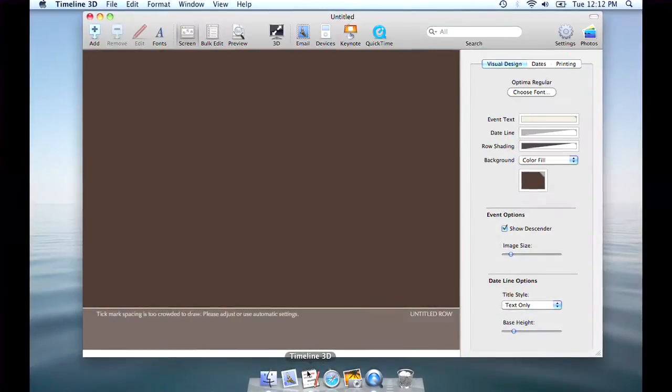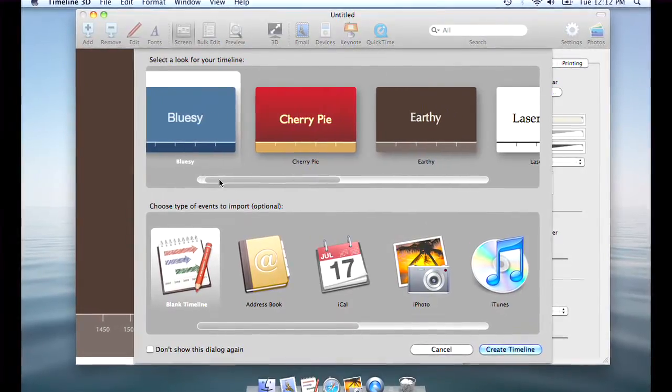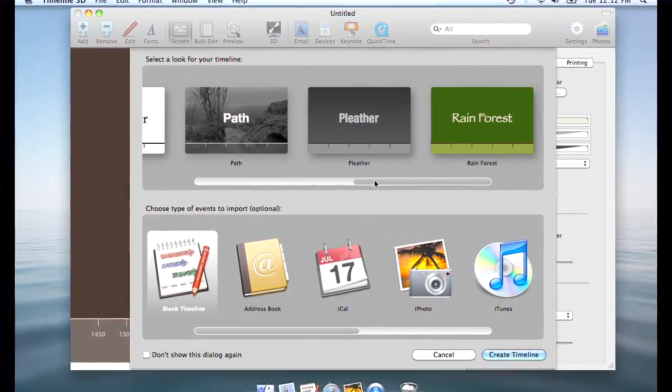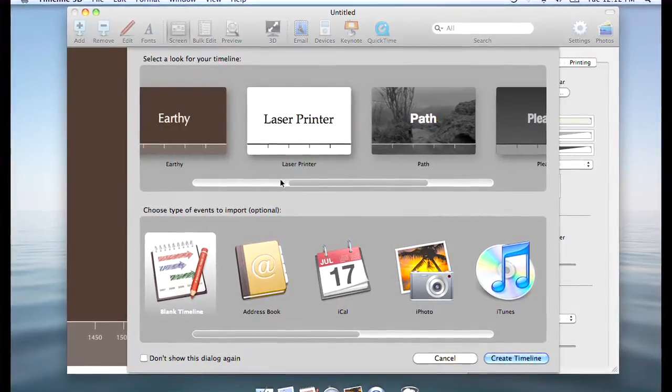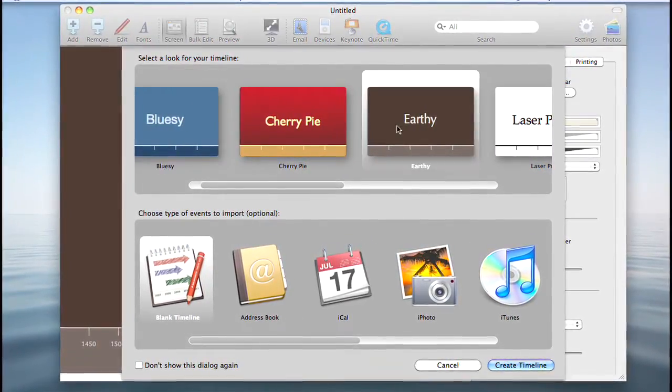After I've installed the software, I'm going to open up BDocs Timeline 3D and select a look for my timeline. The looks are color combinations that will serve as the background for your timeline. I can always change my look later if I want to, but for now I'm going to select Earthy.